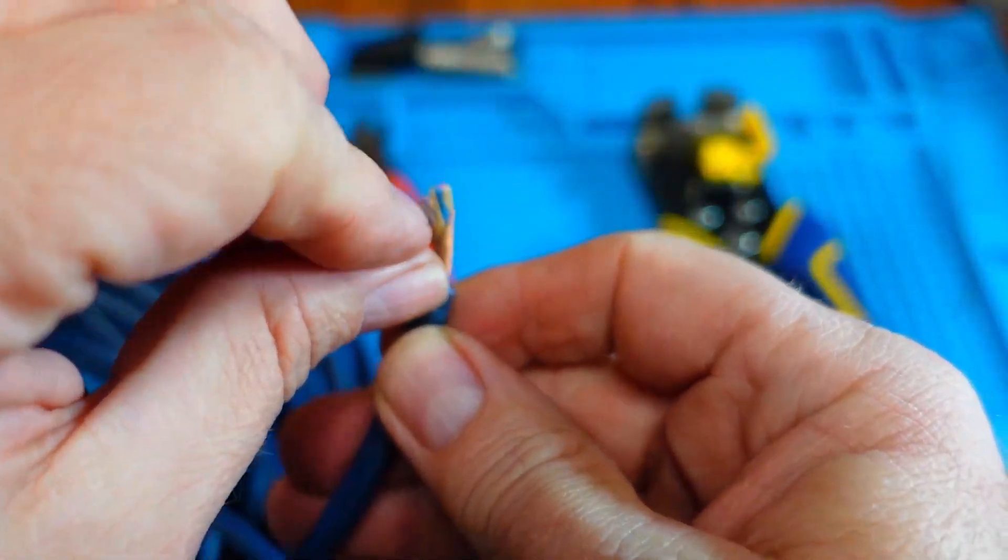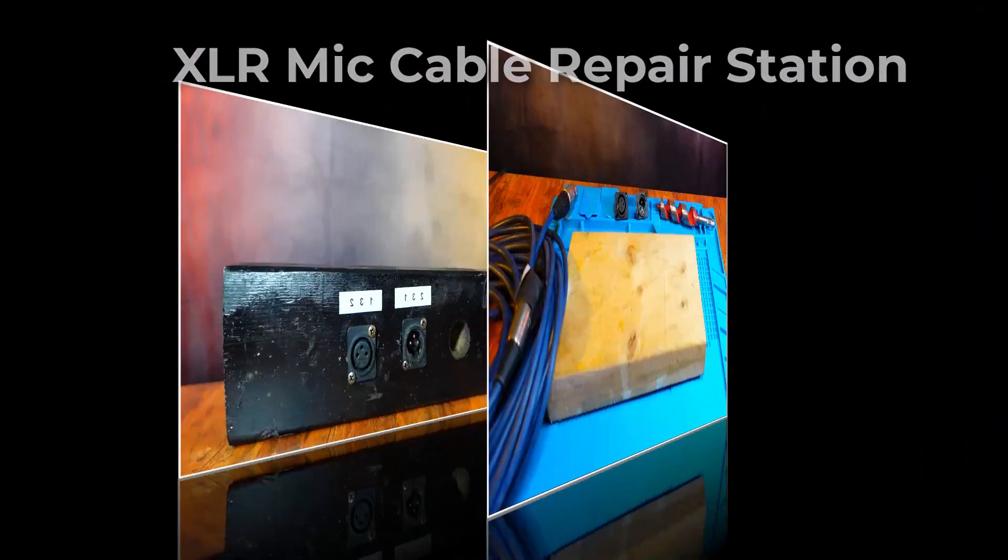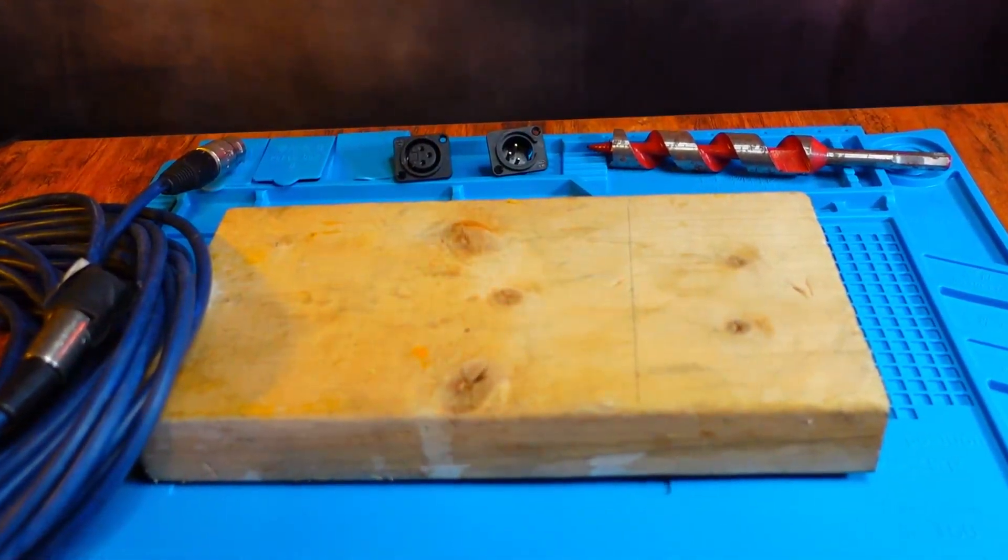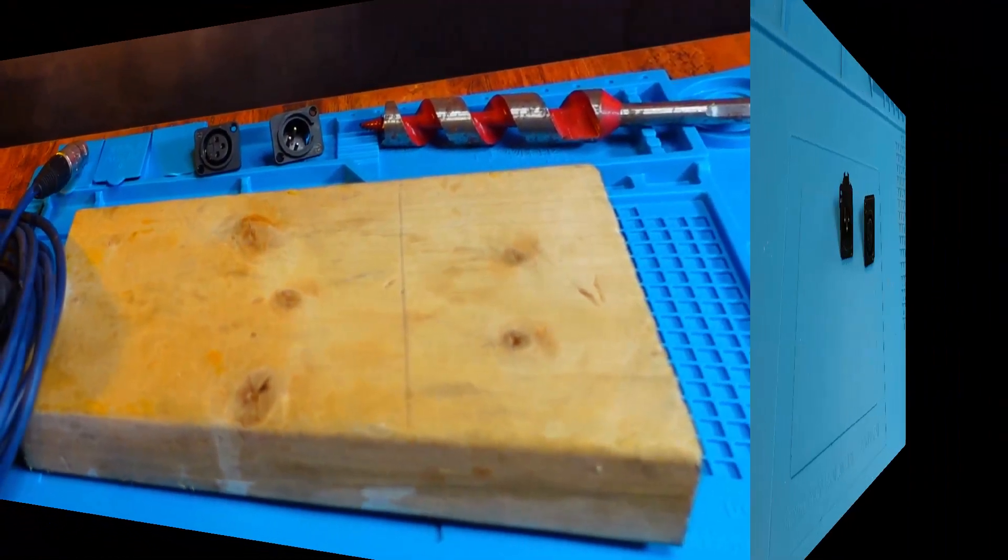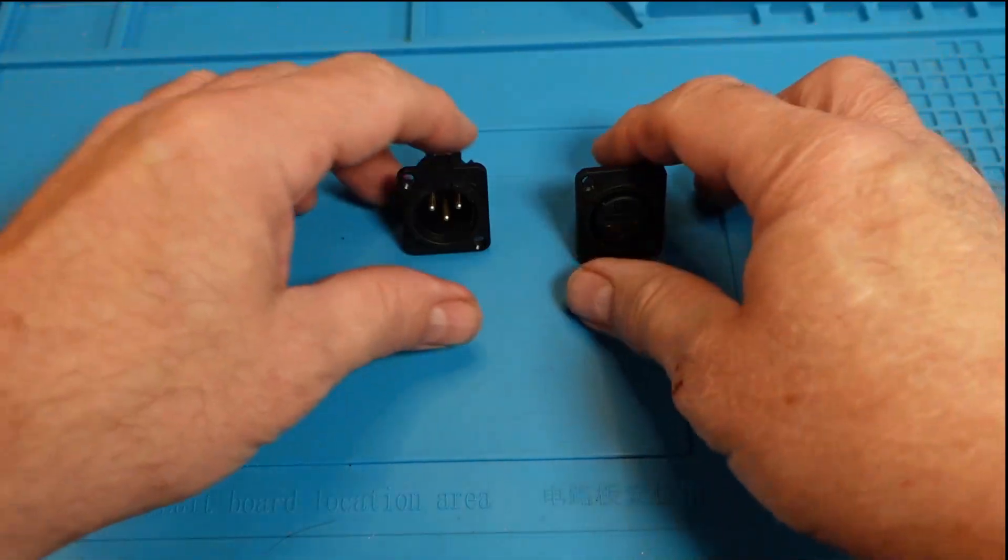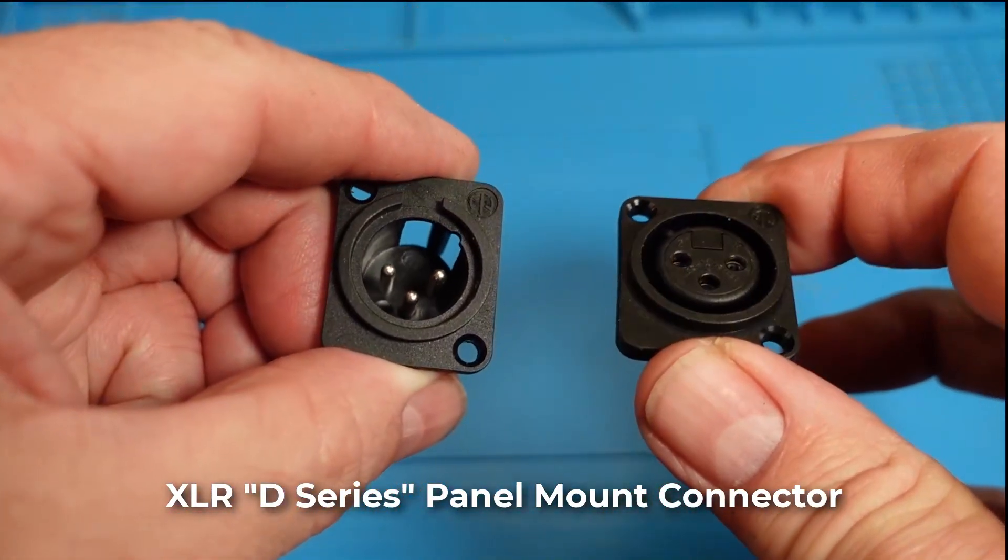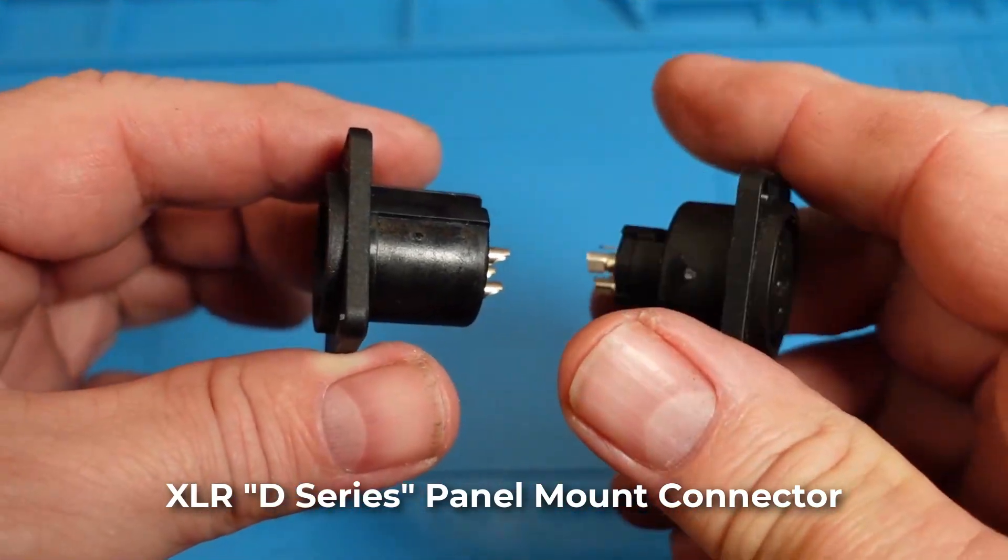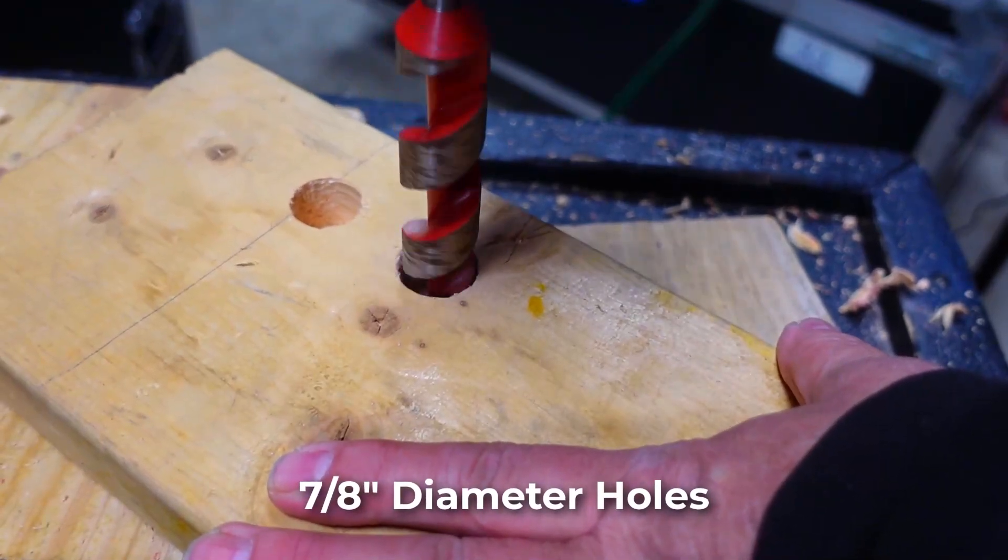The first tip is to make yourself an XLR mic cable repair station. Grab a scrap piece of lumber about this size—a 2x4 or 2x6 is fine. Get one each of a male and female XLR D-series panel mount connector like these. I'll leave links for these in the text below. Drill a couple of 7/8 inch holes in your board.